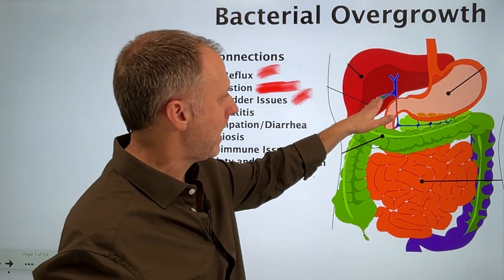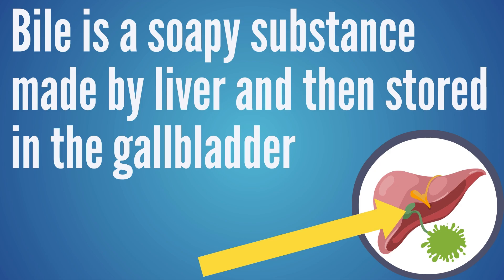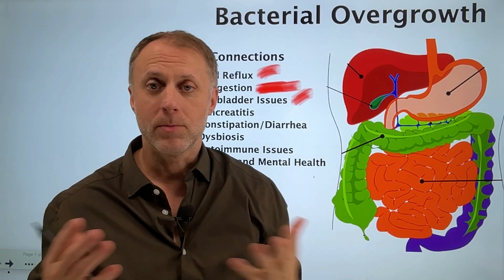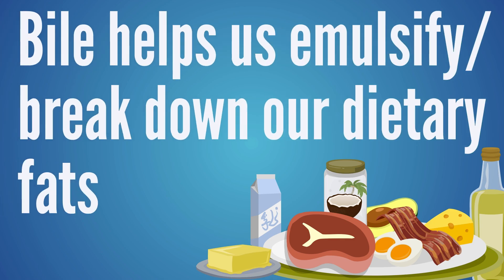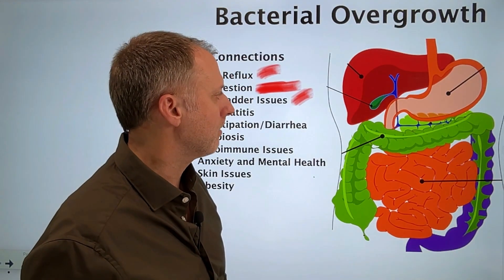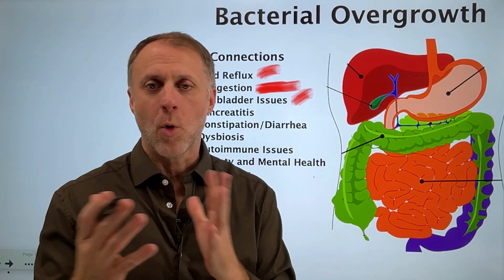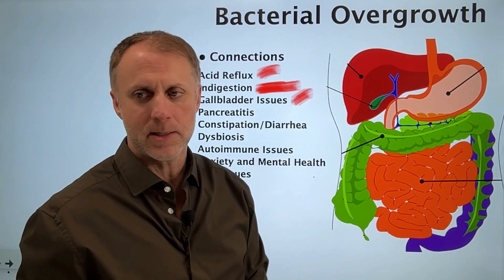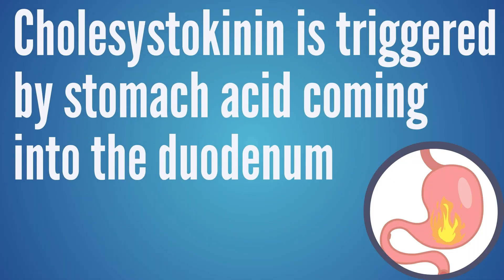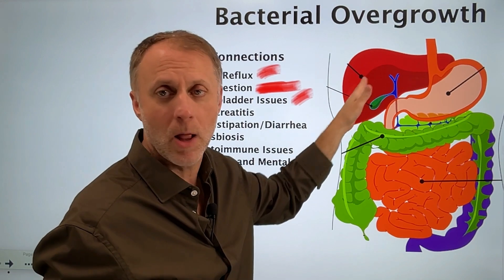Next, let's look at gallbladder action. The gallbladder's job is to take the bile the liver makes — a soapy substance — store and concentrate it, and then squirt this alkaline bile down when food leaves the stomach, to neutralize the acids, emulsify dietary fats, and help us access fat-soluble vitamins like A, E, D, and K. The problem is if food is not being acidified correctly, it can cause malfunctions here. The gallbladder is triggered by a hormone in the duodenum called cholecystokinin, which is itself triggered by stomach acid.